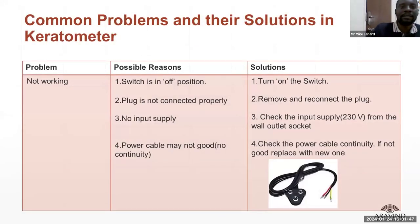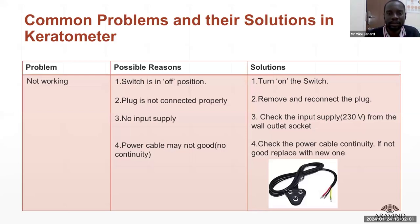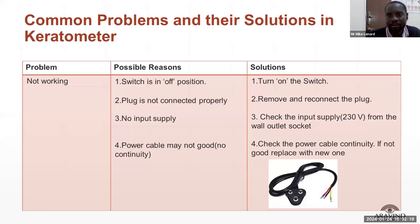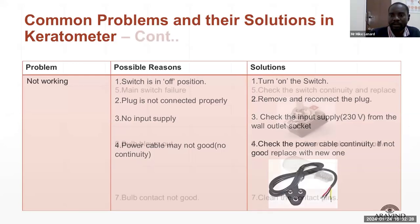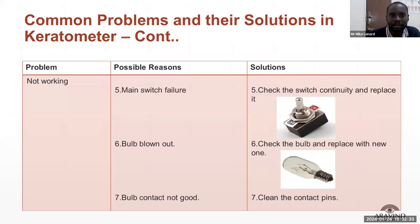Regarding problems you might face: if the equipment is not working, check if it is in the off position and turn it on. If the plug is not connecting properly, or there is no power supply, the machine won't work — check the power cable continuity. The main switch may have failed — check its continuity. The bulb may have blown — check the bulb and its contacts, clean them, and replace if needed.